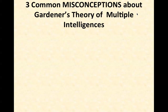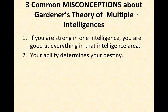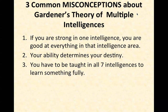Getting back to Gardner's theory, there are three common misconceptions. First, if you are strong in one intelligence, you are good at everything in that area — that's not necessarily true. Second, your ability determines your destiny — also not true; you can change your ability over time. Third, you have to be taught in all seven intelligences to fully learn something — also not true. If a lesson is given in your strongest intelligence, you might acquire it more easily, but a different style just means it might be more challenging, not impossible.